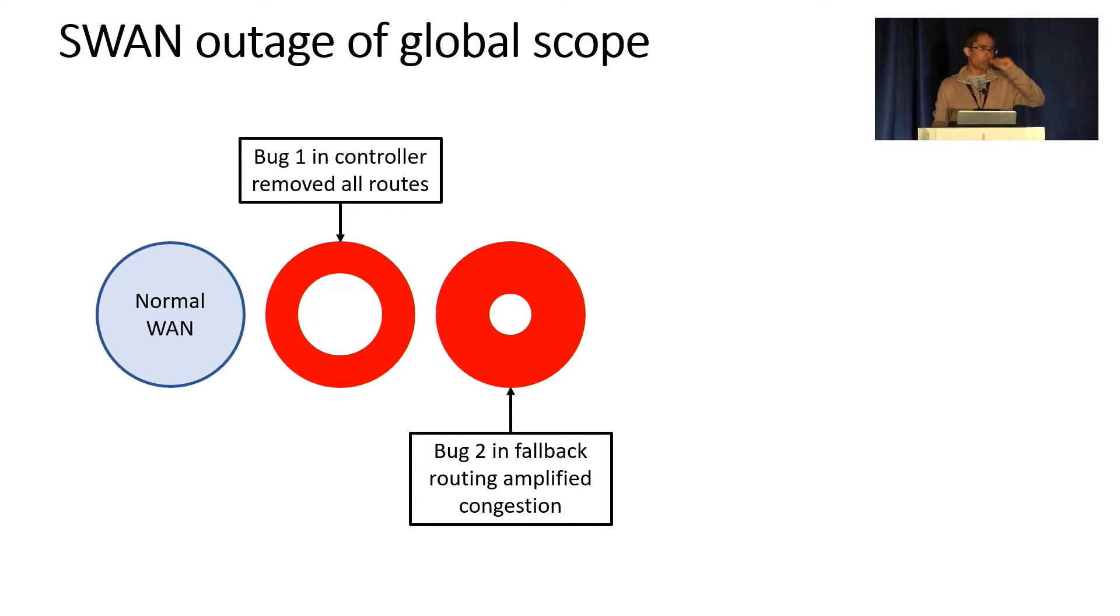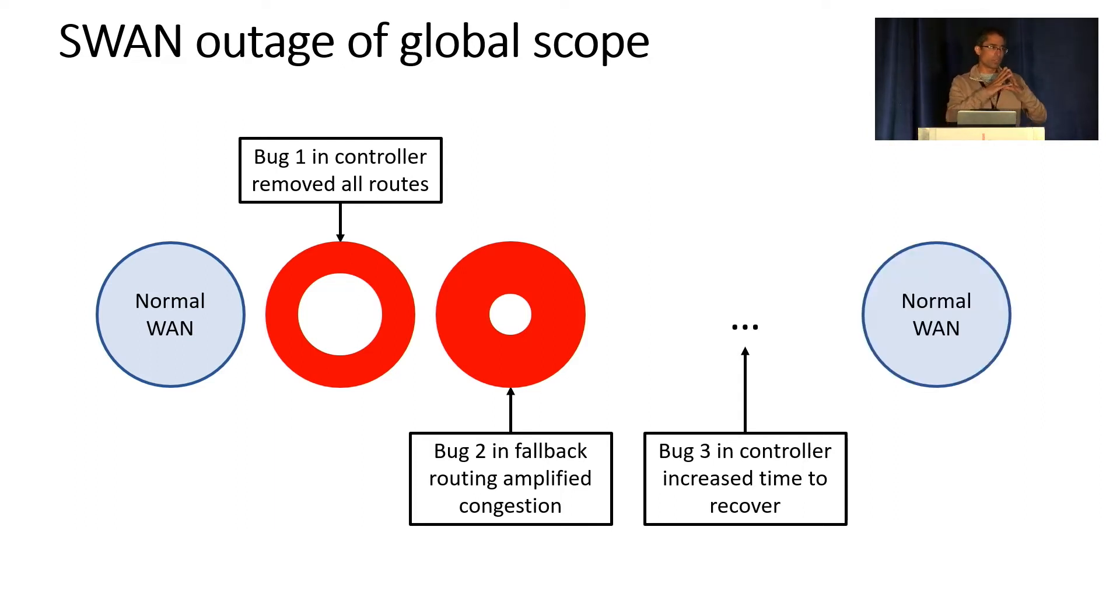And this was a transient, so it would go away in about three minutes. But then afterwards, we had a third bug that triggered, which extended it for more minutes. Eventually, the network recovered. But when you have an outage of this kind of global nature, you have to take a step back. Obviously, we fixed all of these issues. But I think when you take a step back, you look at this approach that we're taking about having centralized controllers that are doing optimization, is that the right approach for the kind of criticality that we have on the network?